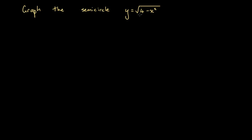Graph the semicircle y equals the square root of 4 minus x squared. In order to answer this question, it's really good to remember how exactly we define a semicircle.